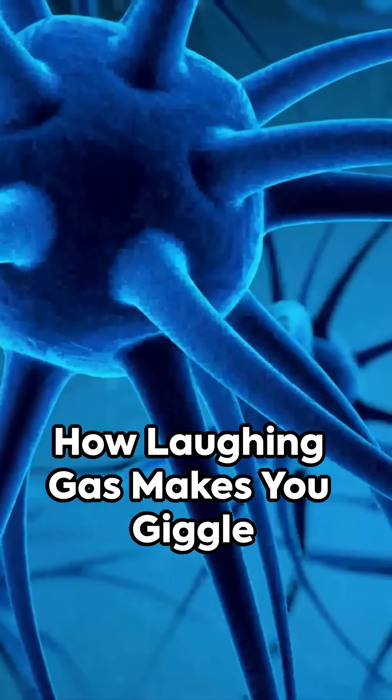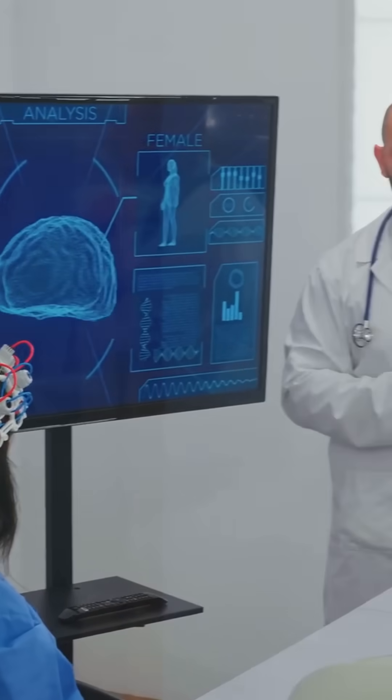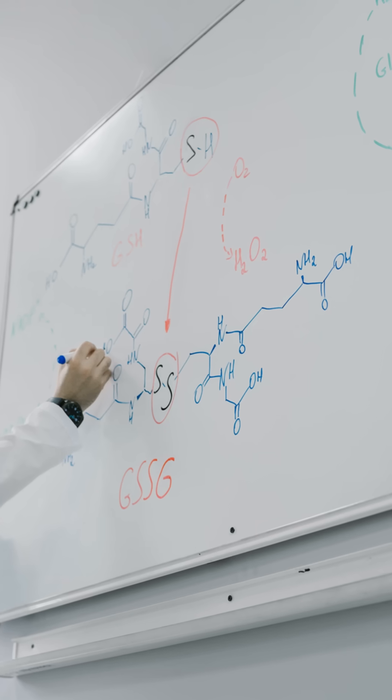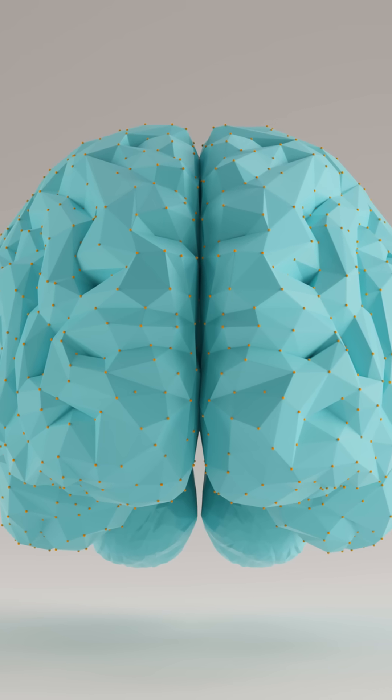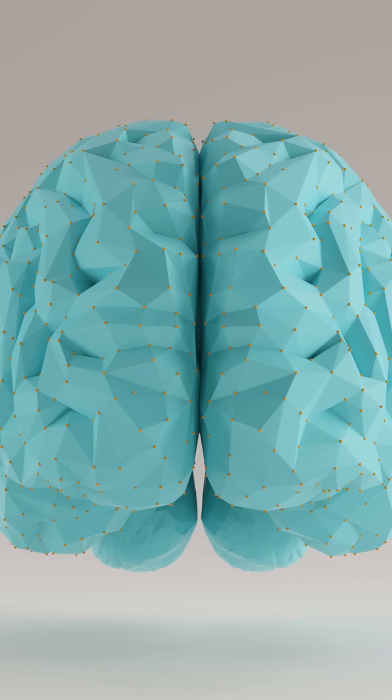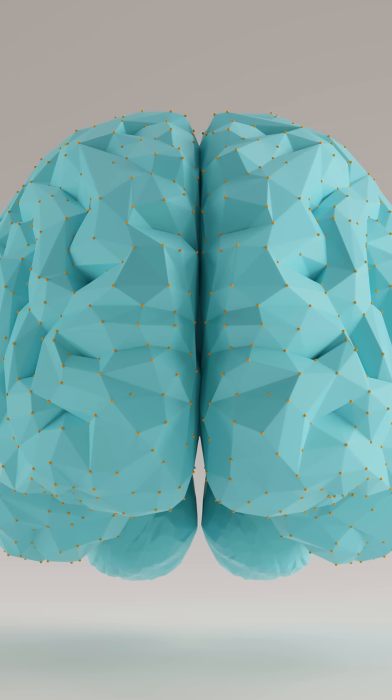How does laughing gas work its magic on the brain? It targets neurotransmitters like GABA and glutamate, which play key roles in our mood and alertness. GABA promotes relaxation while glutamate keeps us alert. Laughing gas boosts GABA activity, making us feel calm and relaxed.